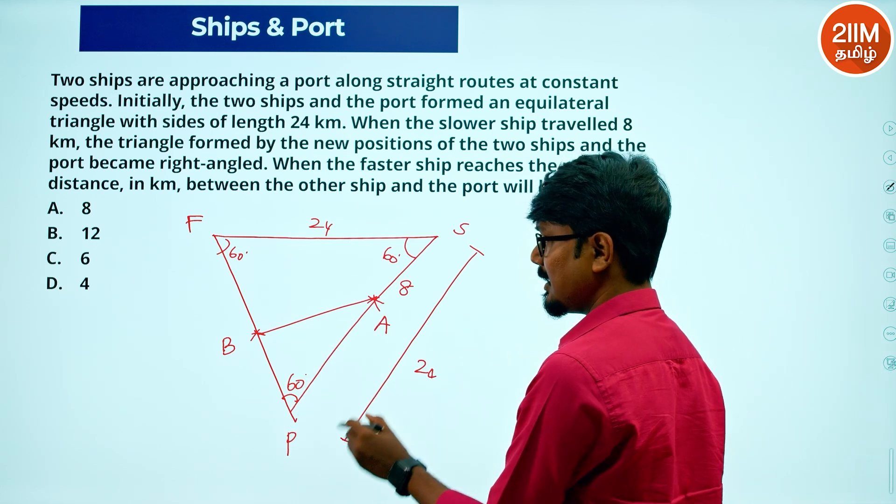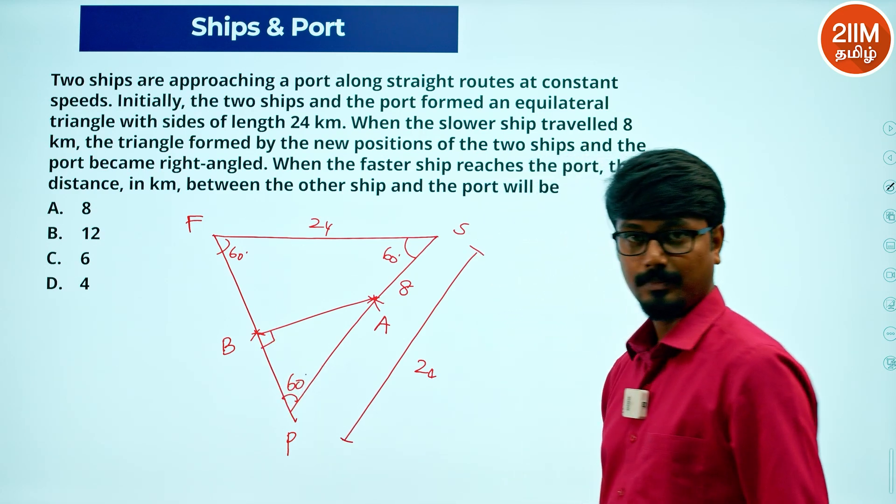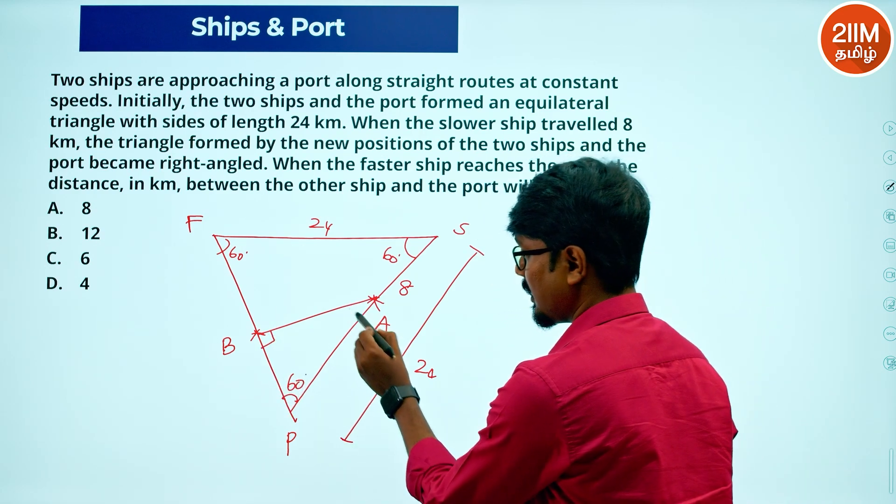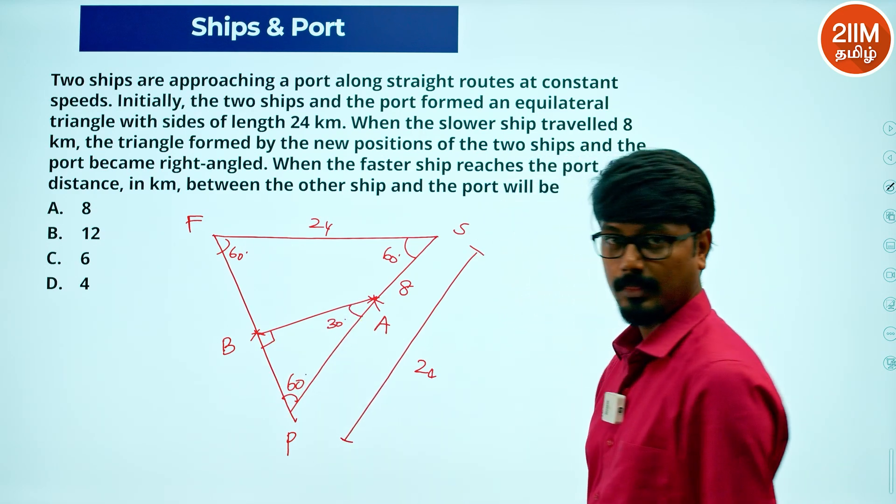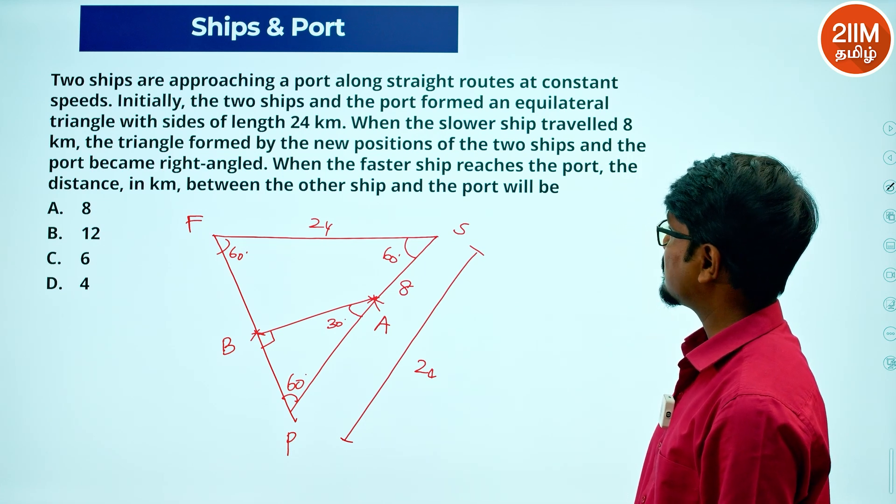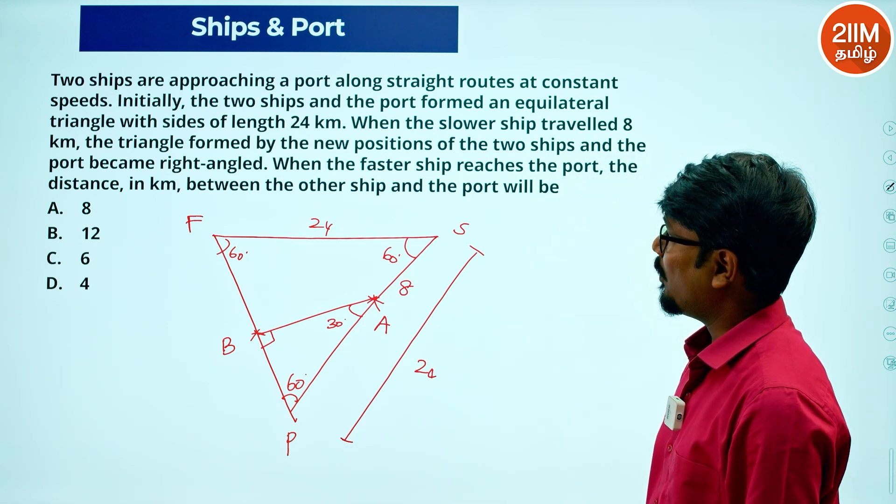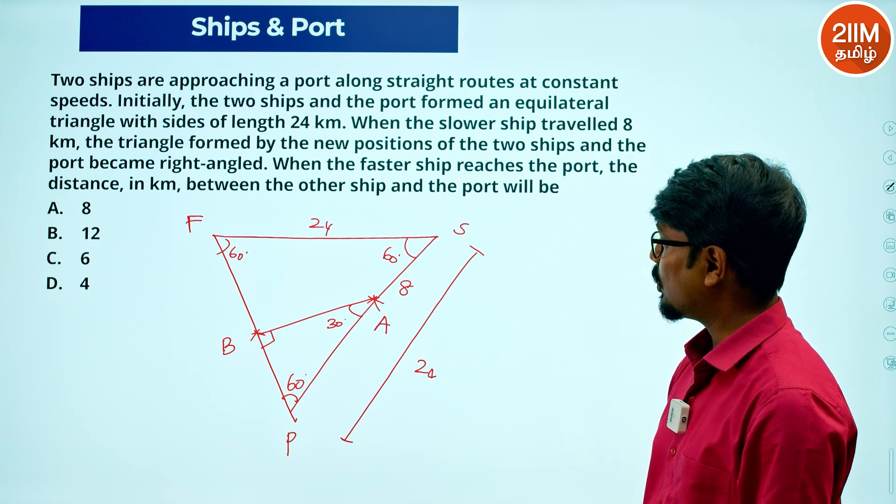This should have been a right angle. When the faster ship reaches the port, then the distance in kilometers between the other ship and the port will be?